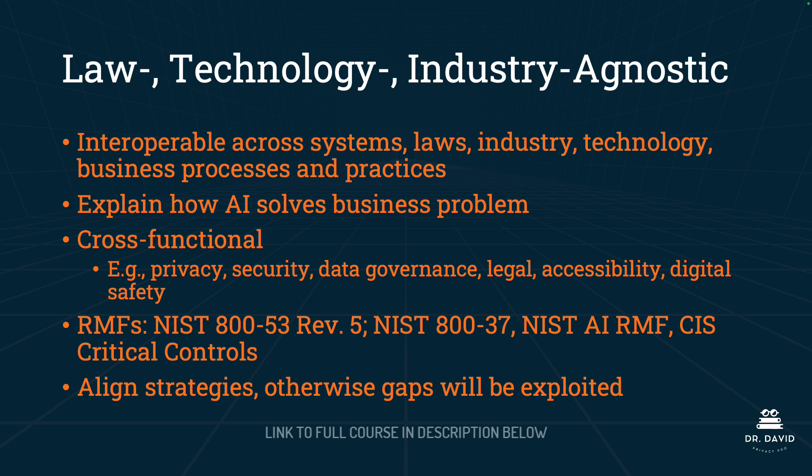You may consider the interoperability of the risk management framework that you choose with those such as NIST 853 Rev. 5, NIST 837, the NIST AI RMF, and the CIS critical controls. Those are just a few examples of other risk management frameworks and controls that are out there. Similarly, you want to make sure that your governance body and your systems are aligned with strategies across the organization. Otherwise, gaps between these organizations may be exploited.